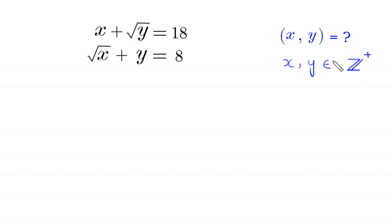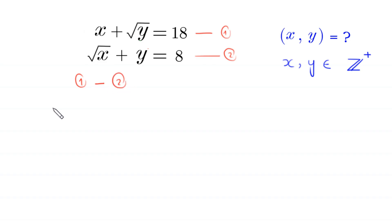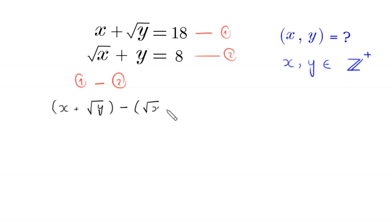So let's start. Let's call this equation 1 and this equation 2. First, from equation 1 we subtract equation 2. So this will become x plus root y minus root x plus y is equal to 18 minus 8.